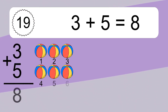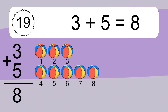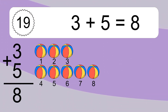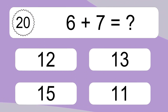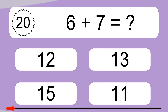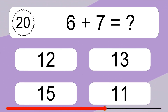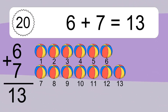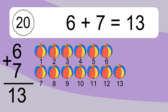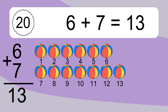3 plus 5 equals 8. Let's count it. 1, 2, 3, 4, 5, 6, 7, 8. 6 plus 7 equals what? 6 plus 7 equals 13. Let's count it. 1, 2, 3, 4, 5, 6, 7, 8, 9, 10, 11, 12, 13.